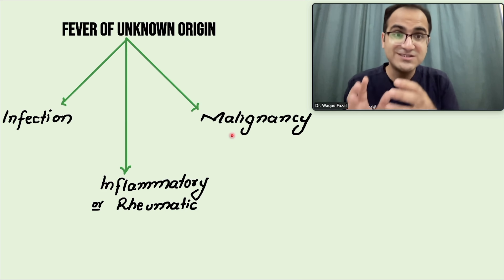CT chest can also be considered. Ultrasound abdomen is performed to look for hepatosplenomegaly and hidden lymph nodes. If you find something on ultrasound, you can then proceed to CT. There are some more important investigations to perform before going for CT scans.